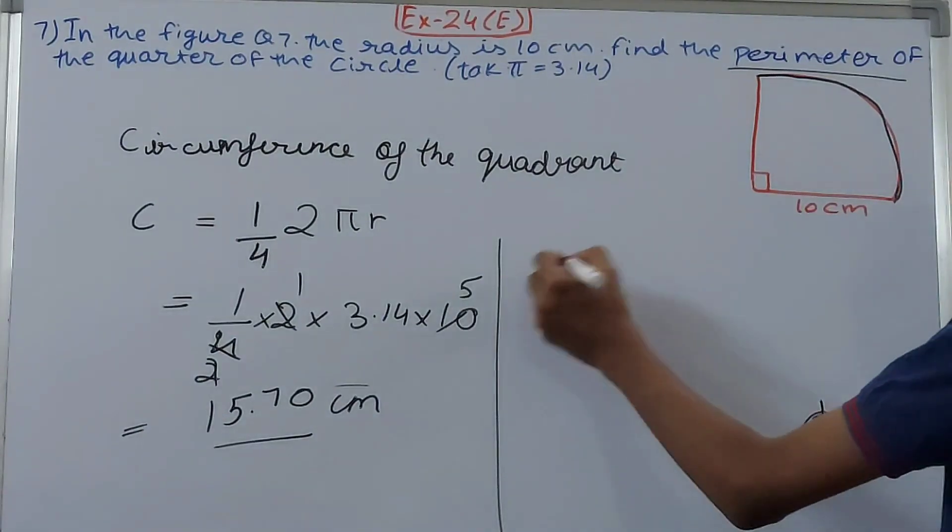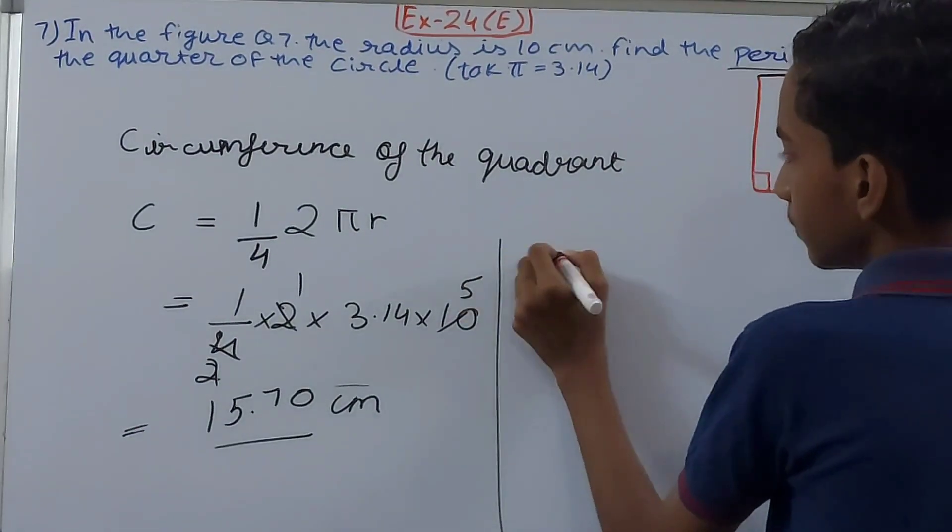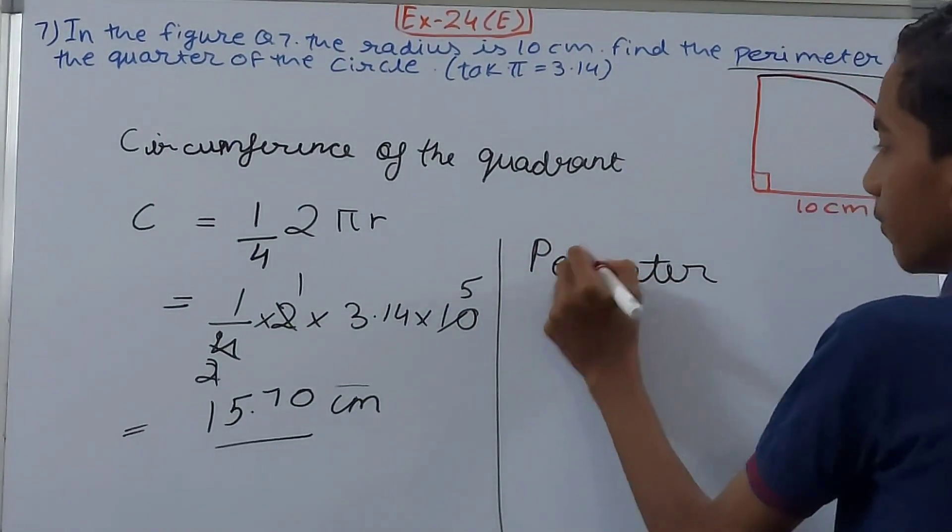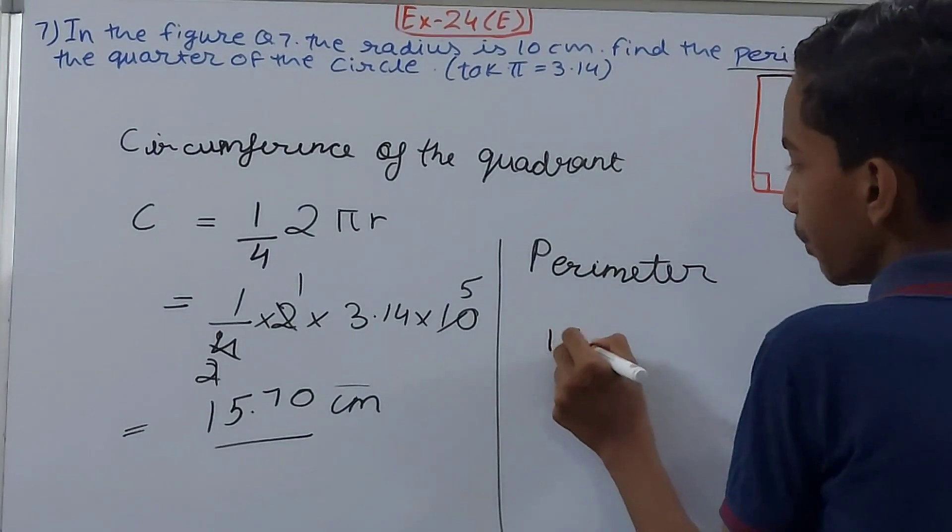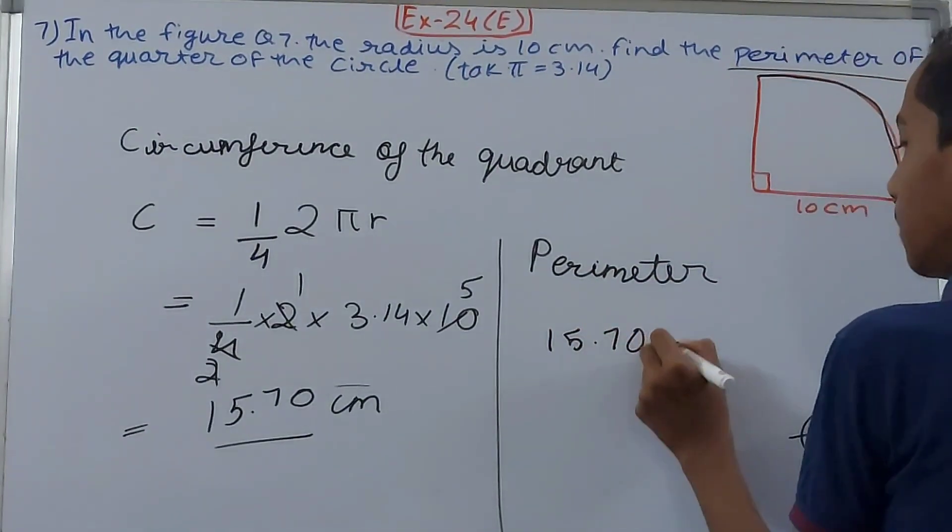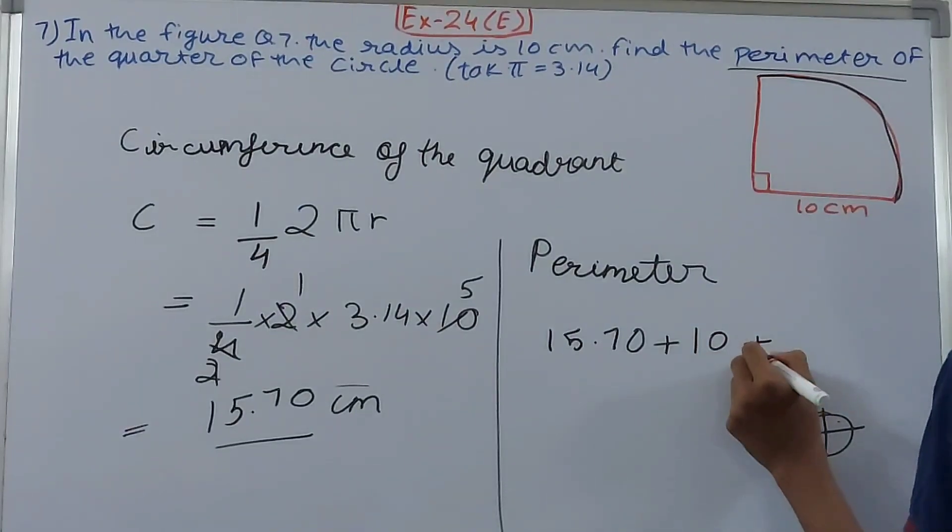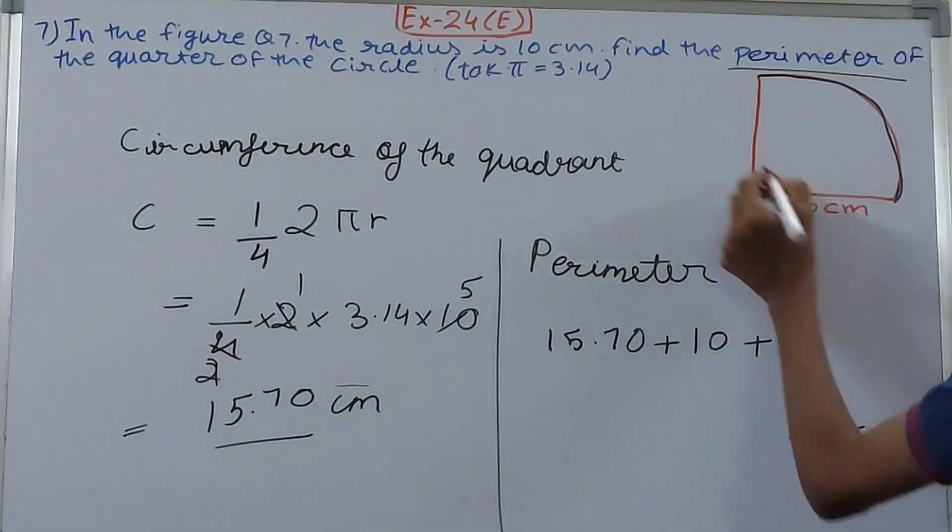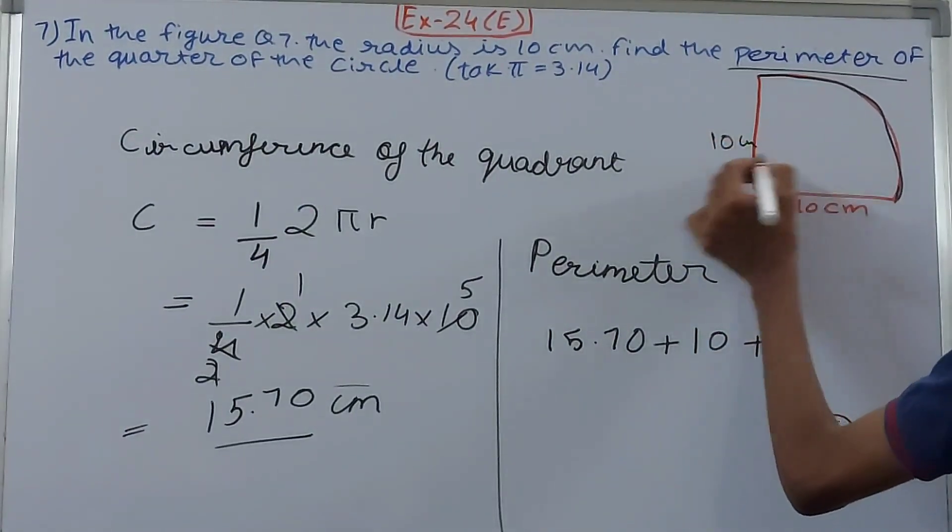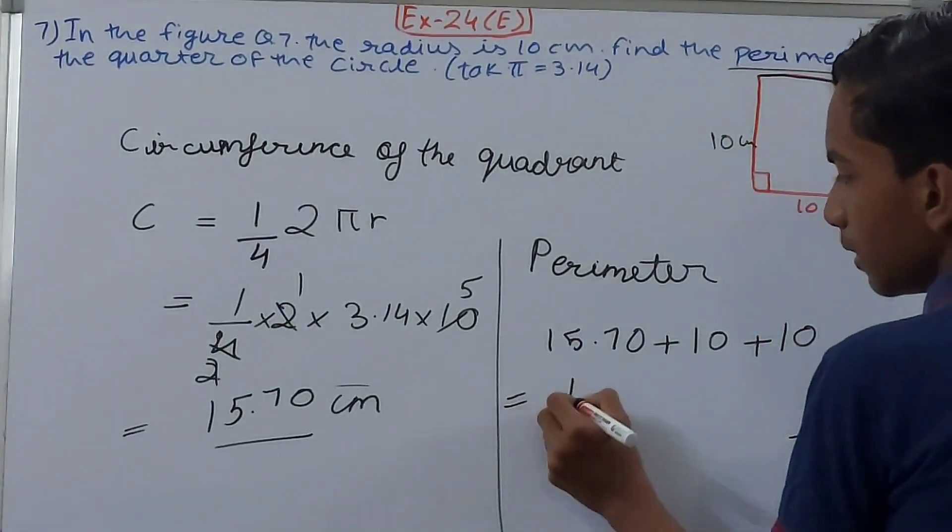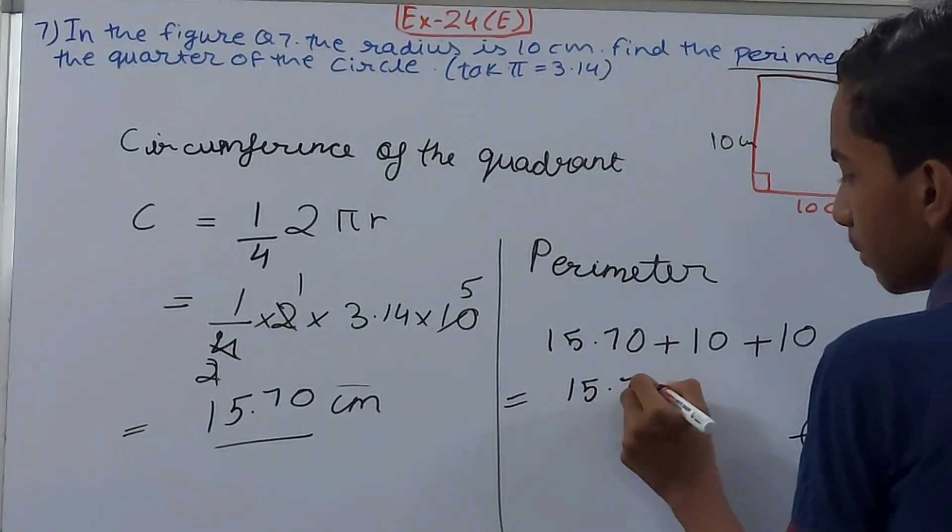So what will this be? Perimeter will be 15.70 plus 10, plus 10 once again, because this side is also 10 centimeters. If this is 10, this one will also be 10. That is what? 15.7 plus 20 is 35.70. And put the units: centimeters. This is the perimeter.